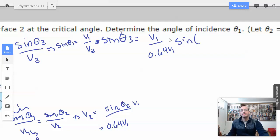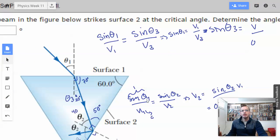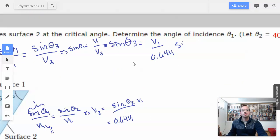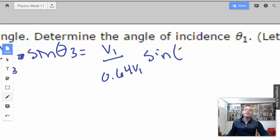Equals V1 over 0.64 V1, sine of, what did we come up with? 20? I think we came up with 20. Which is like, what, 1 third? Probably 1 third. And these guys will cancel.